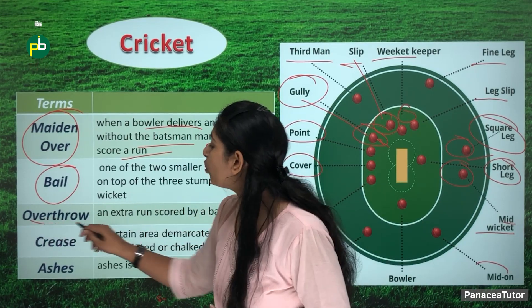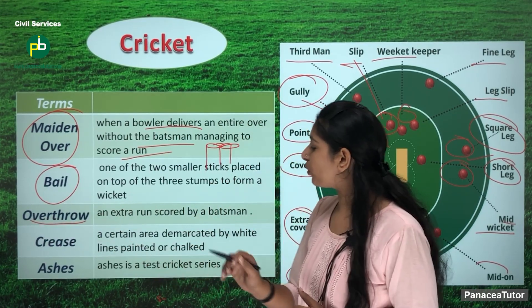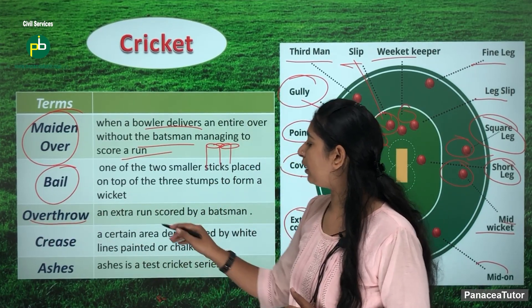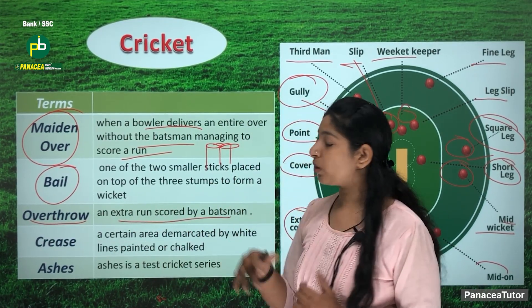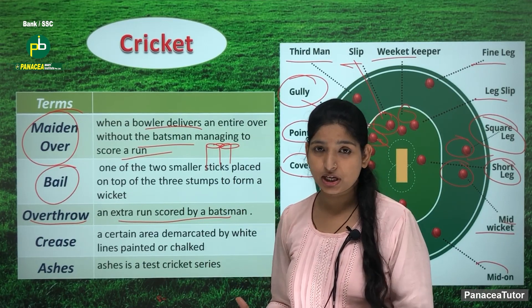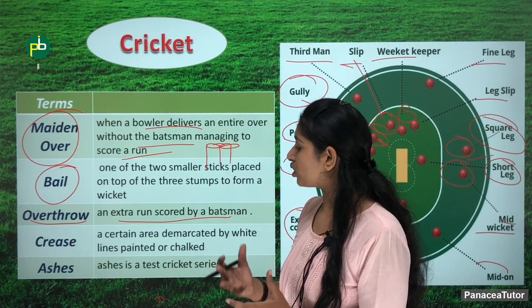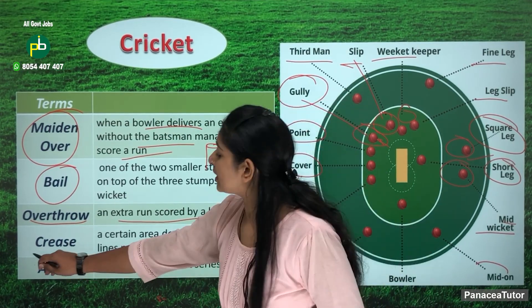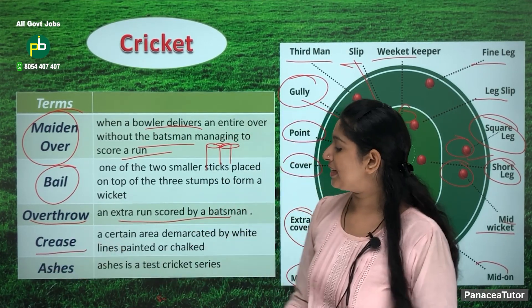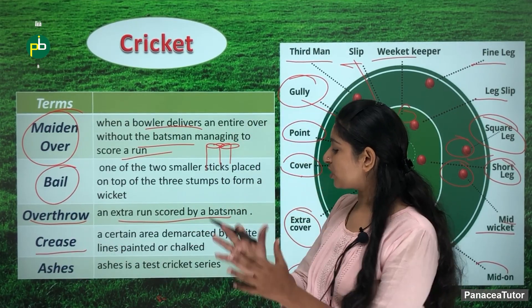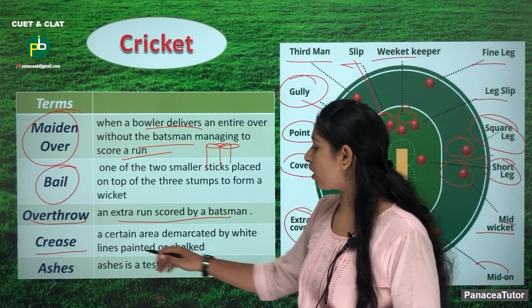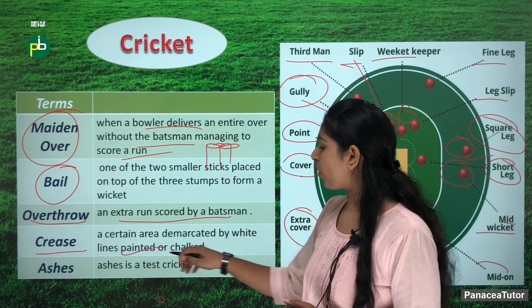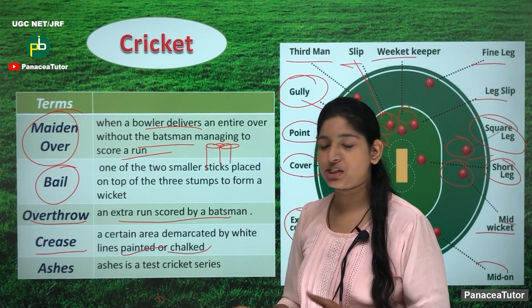In addition, overthrow — what does that mean? When batsmen get extra runs because of fielding errors during bowling, that is overthrow. Then crease — this means the crease lines marked on the cricket ground.